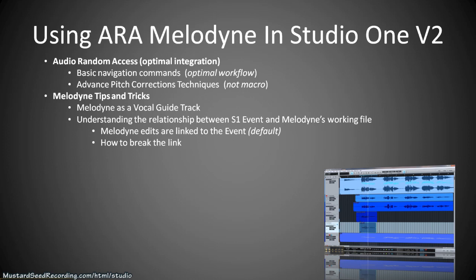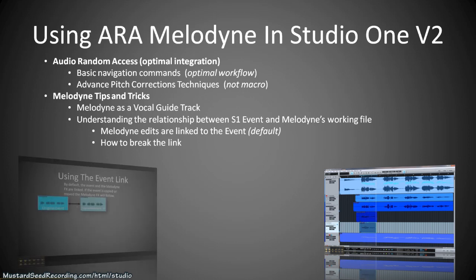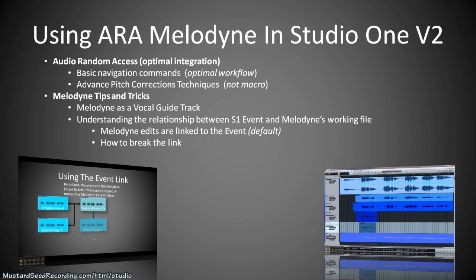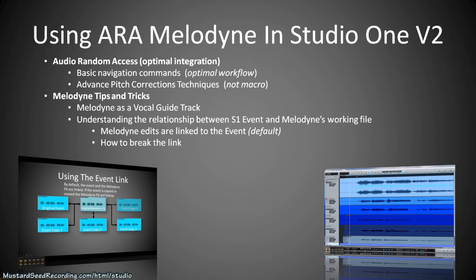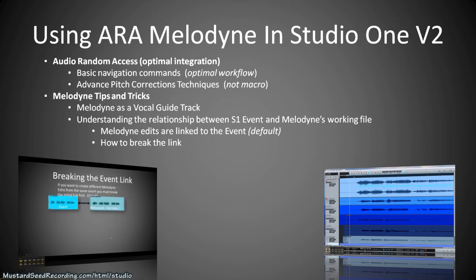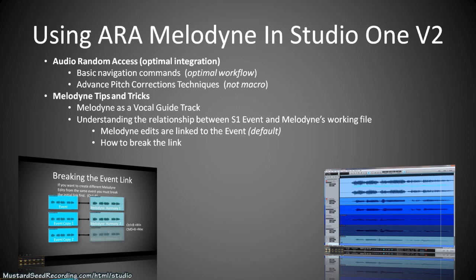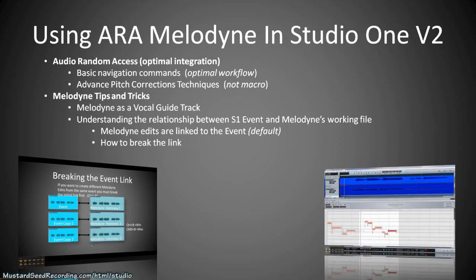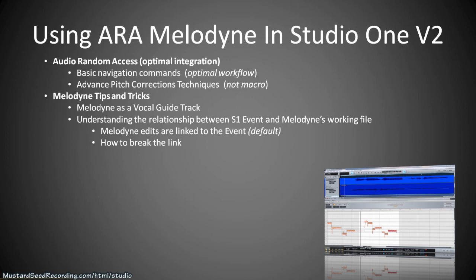We'll talk about understanding the relationship between Studio One events and Melodyne's working or transfer files. By default, the Melodyne edits are linked to the event, so if you copy the event the same edit still goes with it. If you change a note in one event and copy it ten times, you'll have the same changed note each time. We'll discuss this default mode and also how to break that link so you can create multiple harmonies from a single Studio One event.